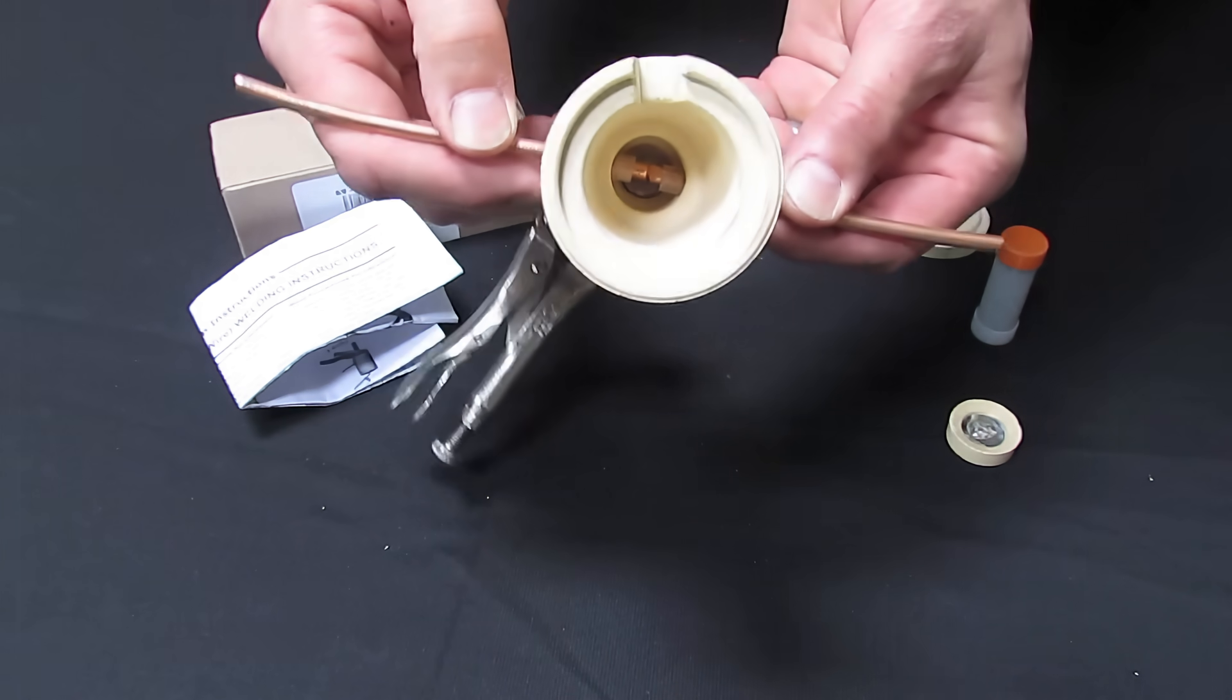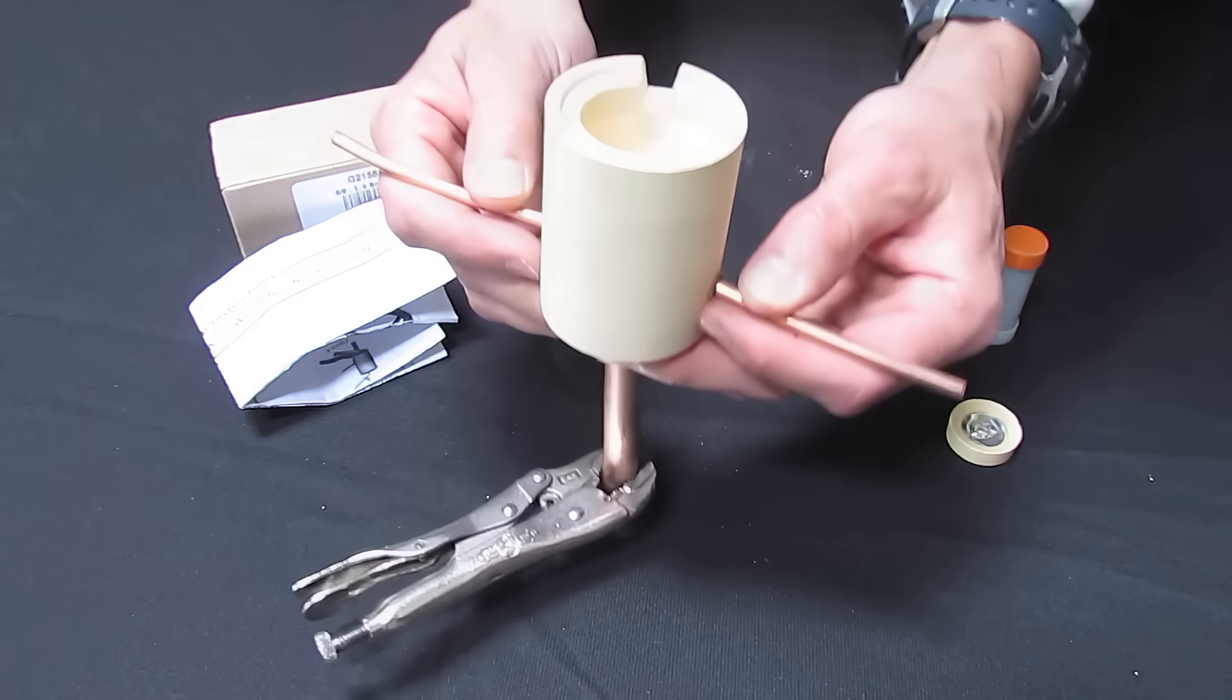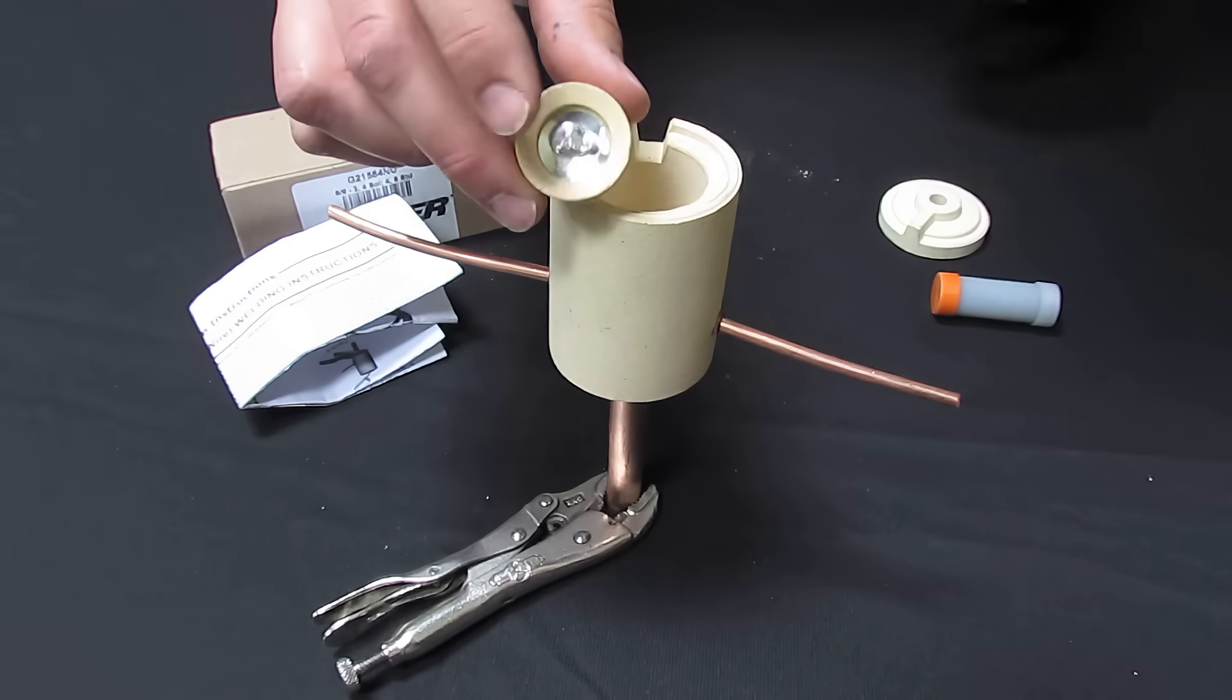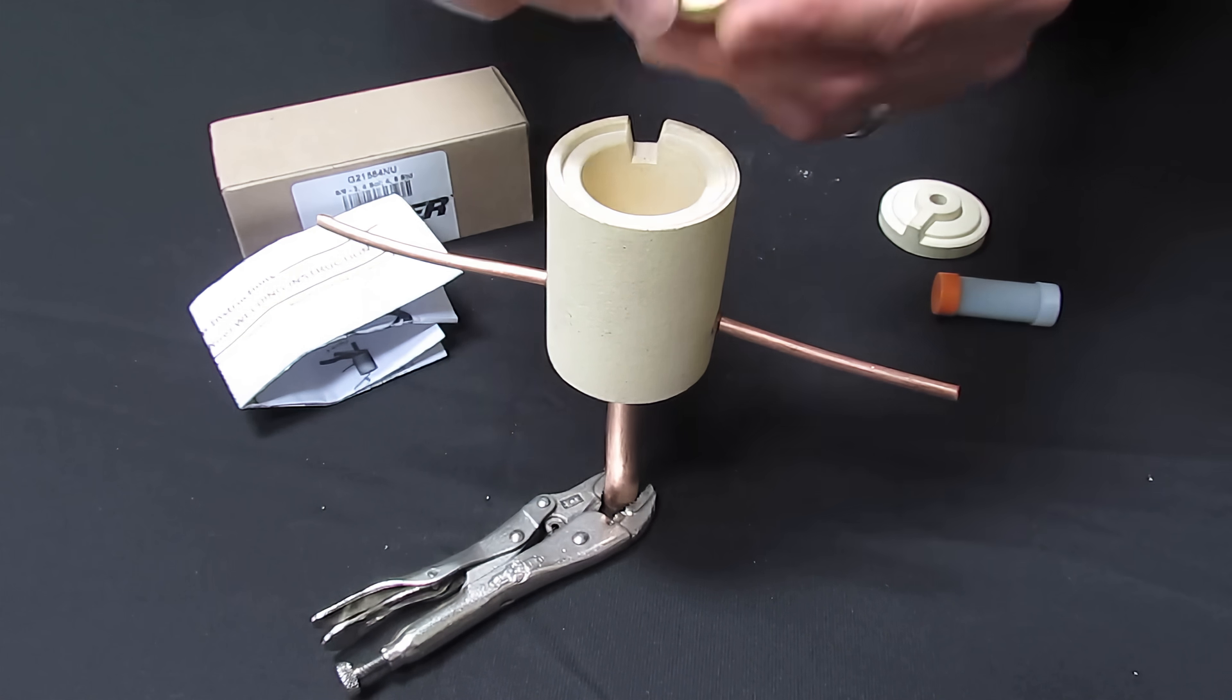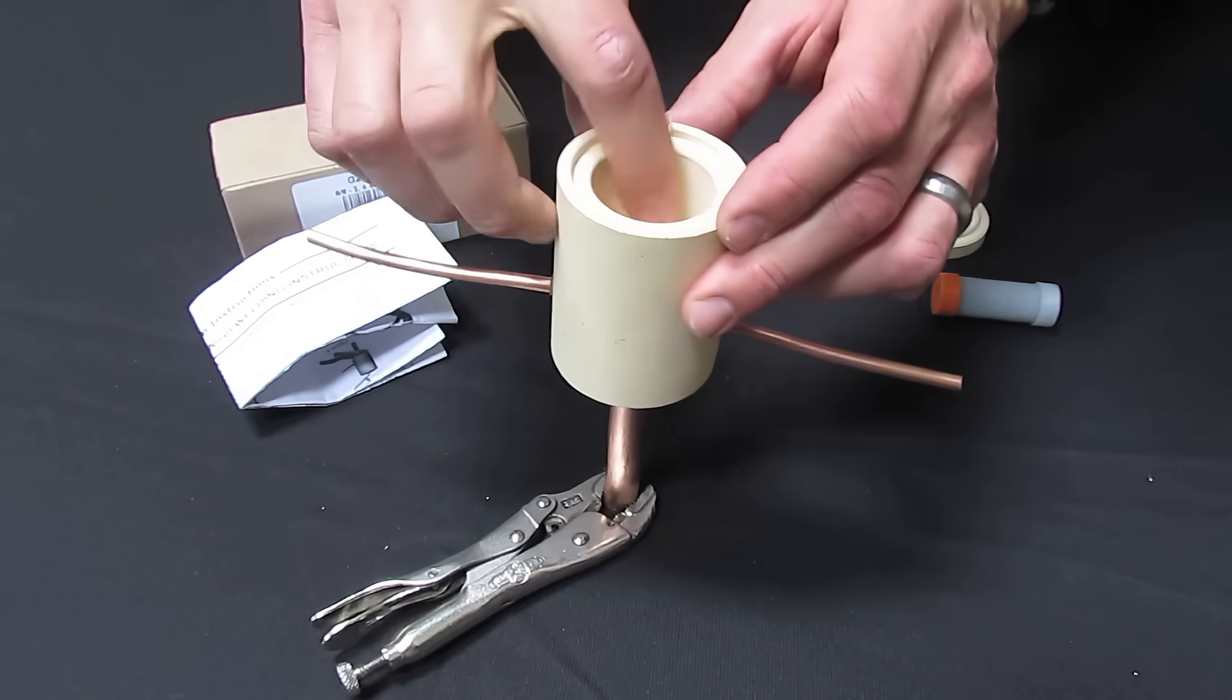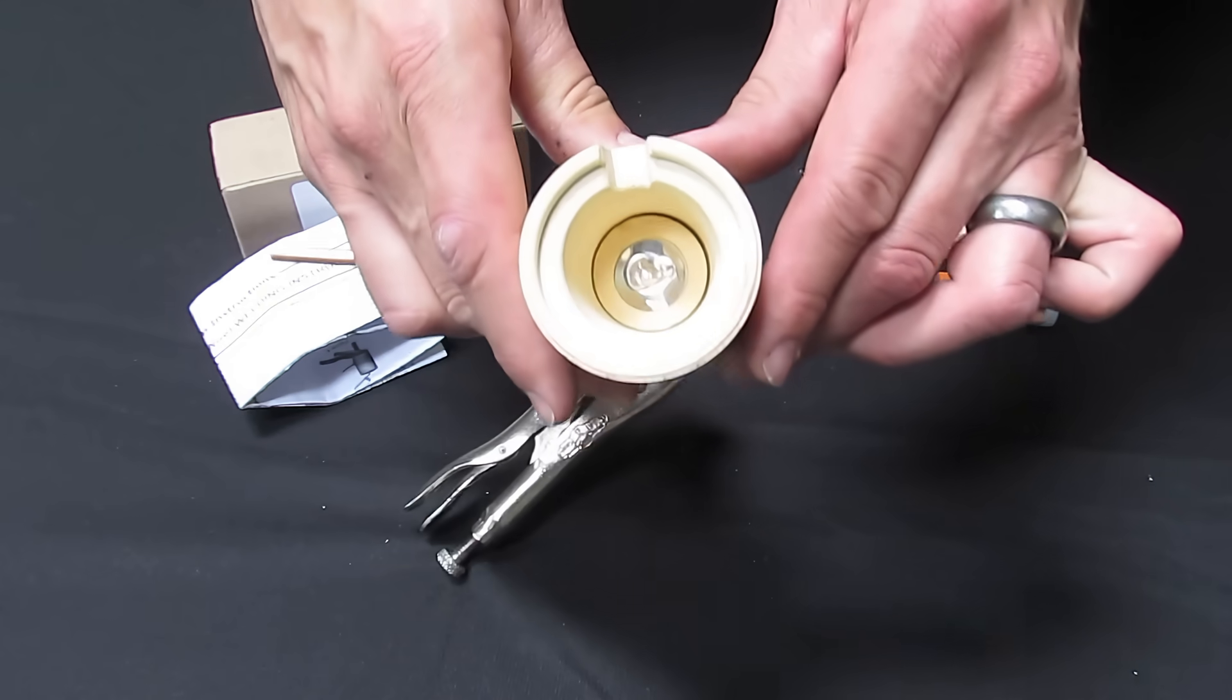And they basically just touch each other right on top of the ground rod. And then you'll put in the disc and make sure that the metal disc part is seated and it drops in there. Make sure it's centered and it's all the way in.